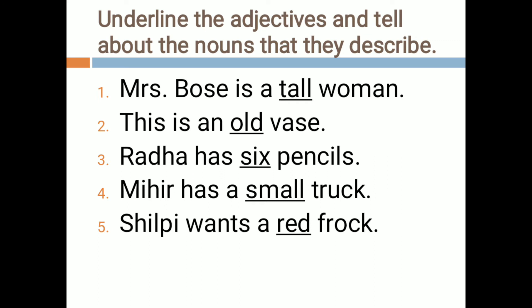In the first example we can see: 'Mrs. Bose is a tall woman.' Now Mrs. Bose is a woman, so the noun is the name of the lady, that is Mrs. Bose. The word 'tall' is representing the size — the height of that lady. Mrs. Bose is the noun here, and her height is tall. So 'tall' is underlined as the adjective.